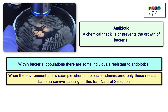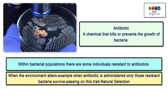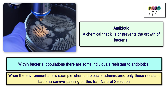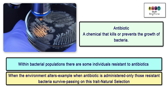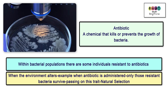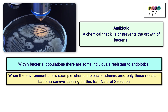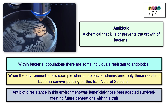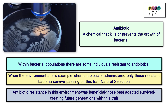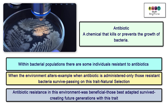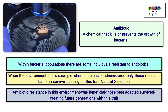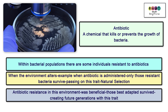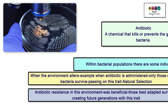When the environment alters — for example when an antibiotic is administered — only those resistant bacteria survive and pass on this trait. In this environment flooded with antibiotics, antibiotic resistance was beneficial and those best adapted survived. Those that had the resistance survived and created future generations with this trait.